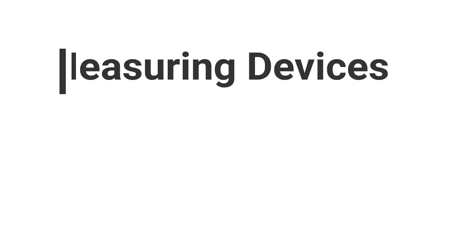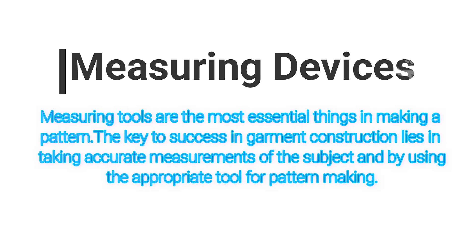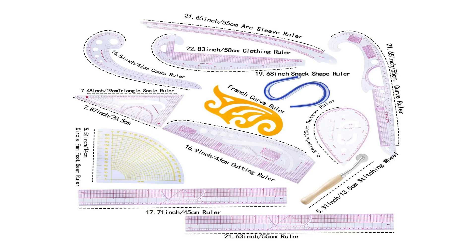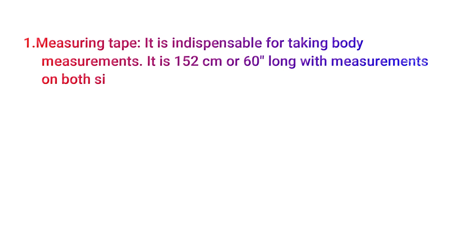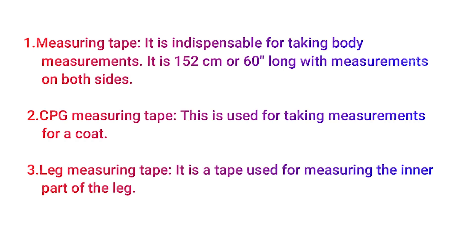We can start with measuring devices. Measuring tools are the most essential thing in pattern making. The key to success in garment construction lies in taking accurate measurements of the subject and by using the appropriate tools for pattern making. This picture shows you the different types of measuring devices used in pattern making. In measuring devices, we have measuring tape, CPG measuring tape, leg measuring tape, measuring stand, and ruler.